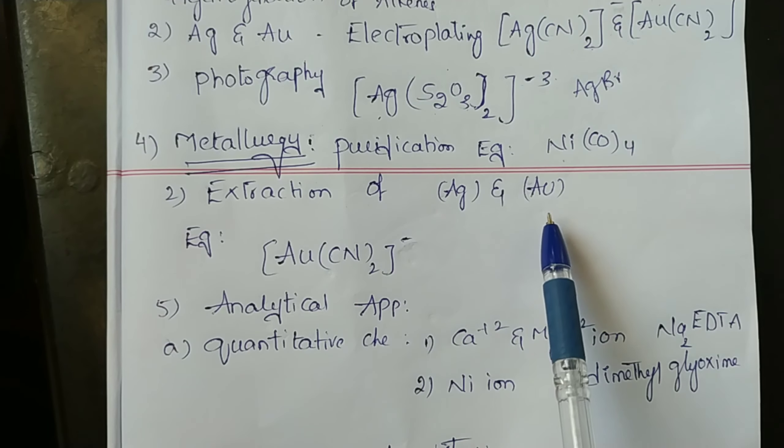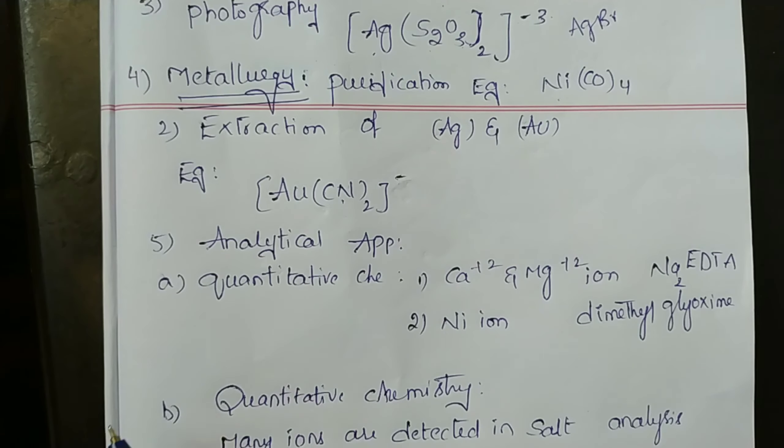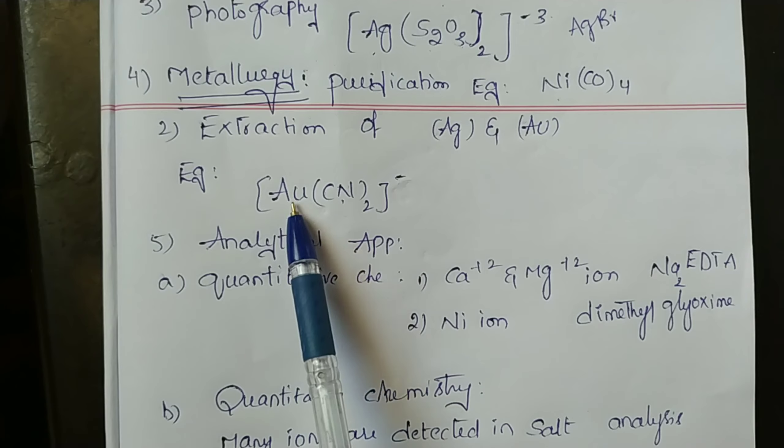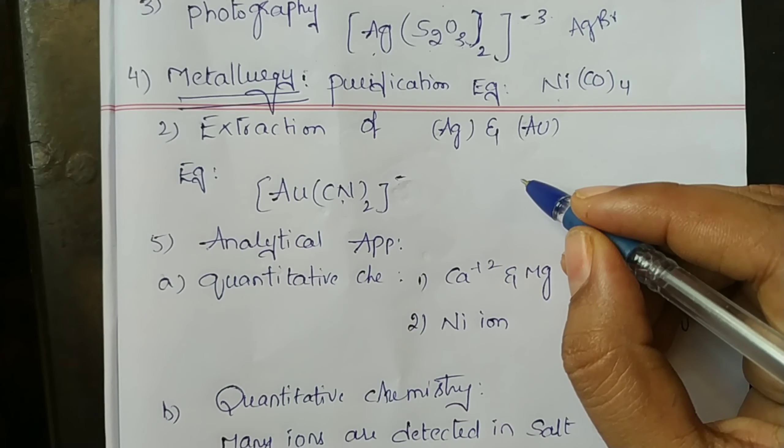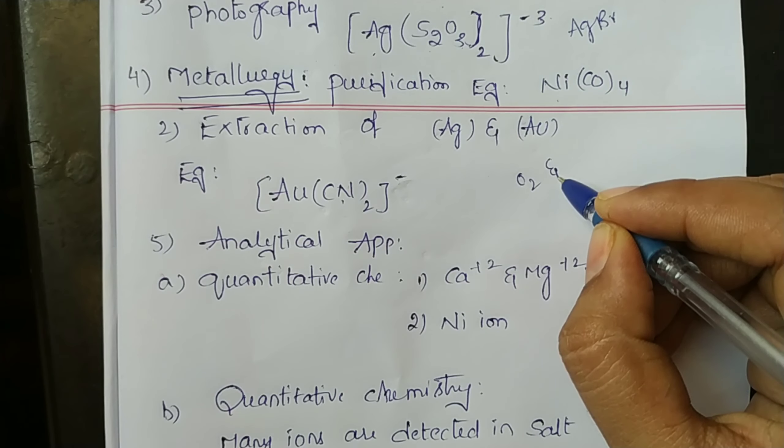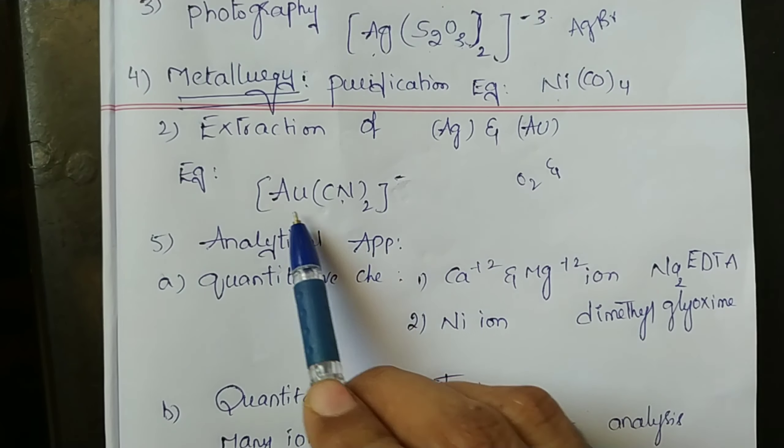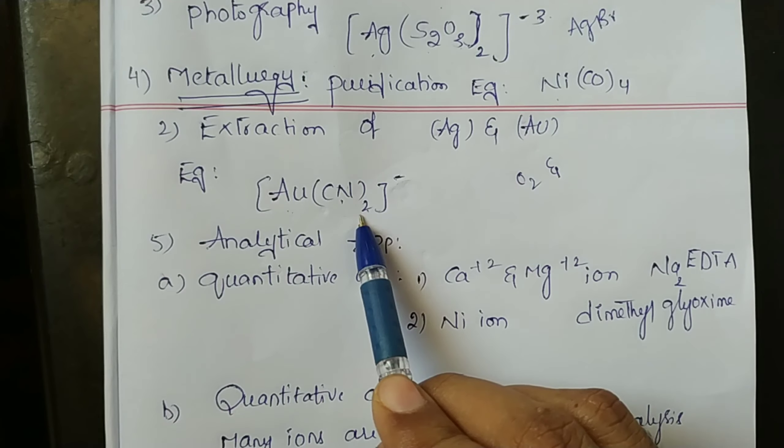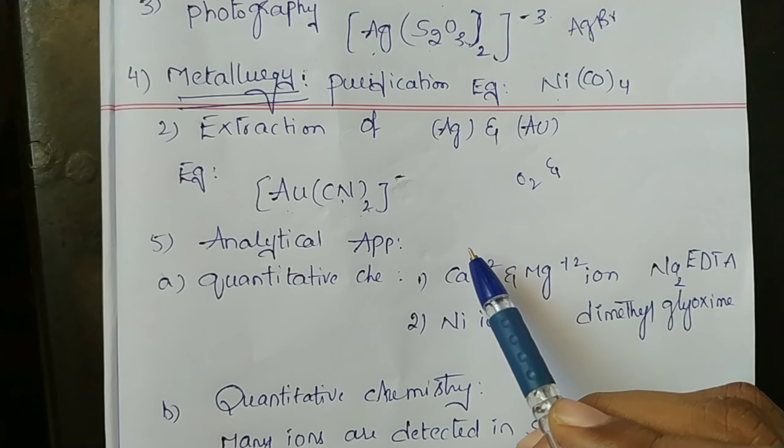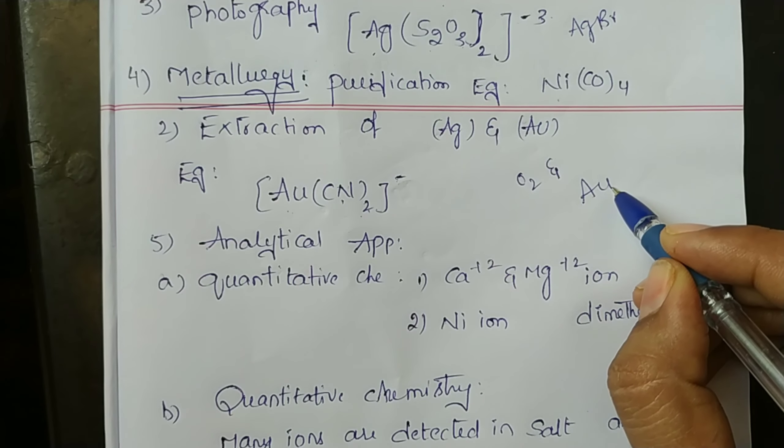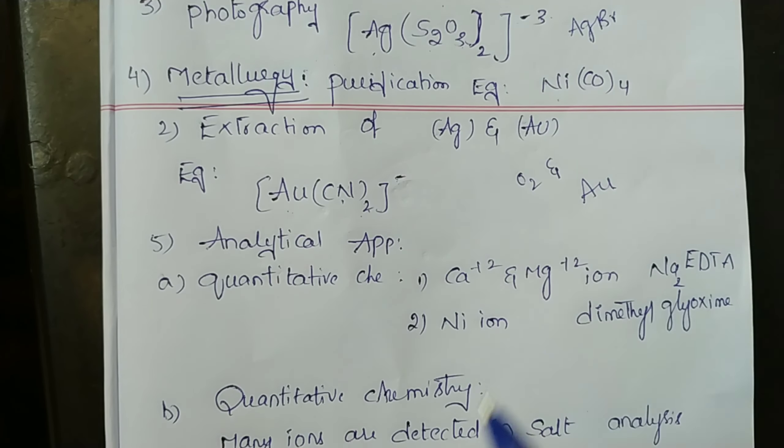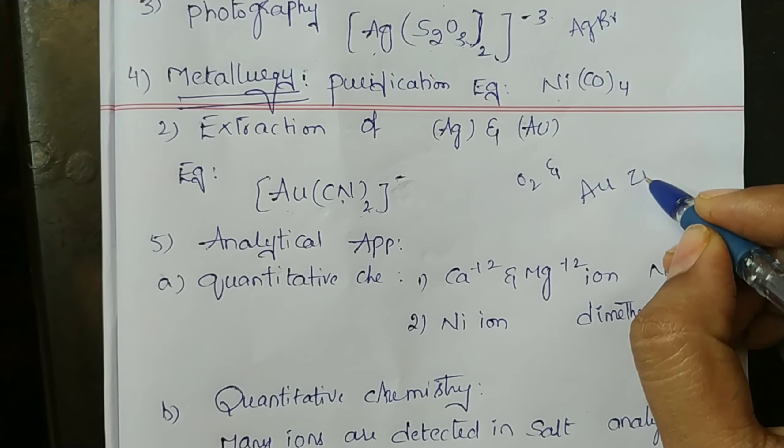Example: gold combined with cyanide in the presence of oxygen and water to form coordination compound [Au(CN)2]-. In aqueous solution, gold can be separated in metallic form from the solution by the addition of zinc.